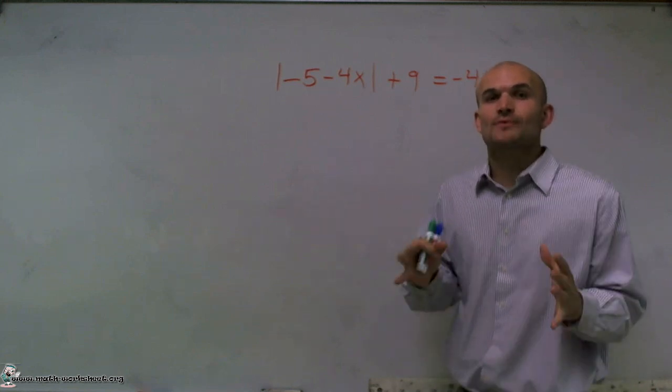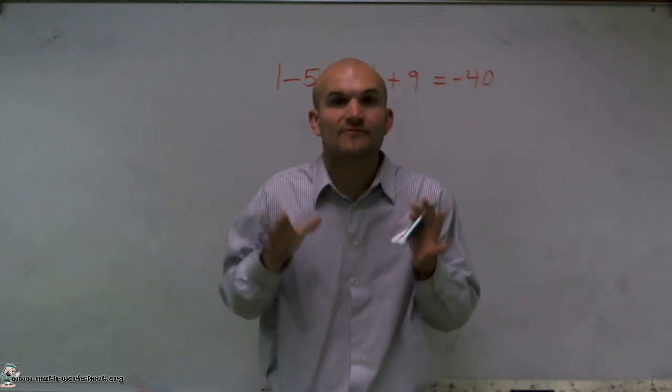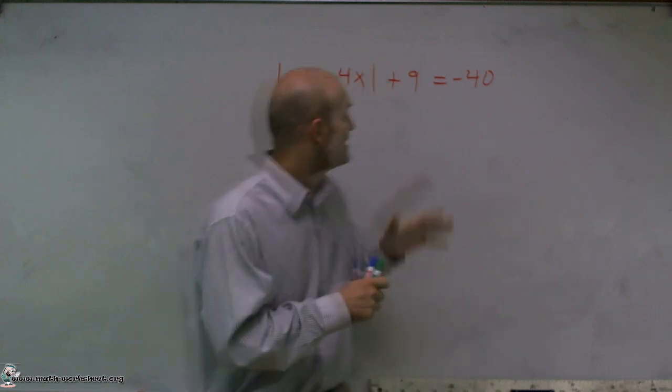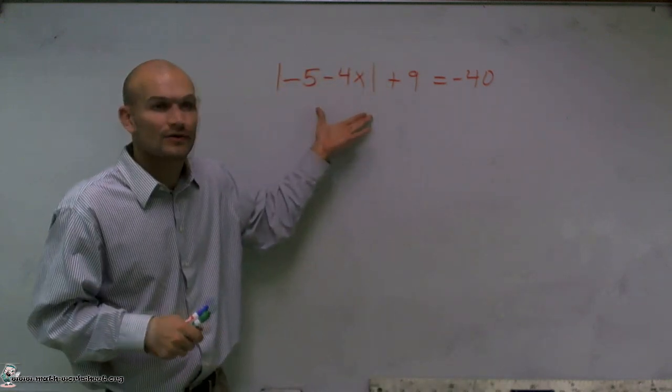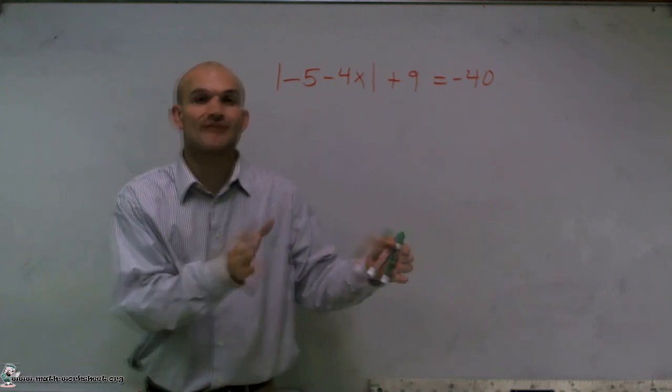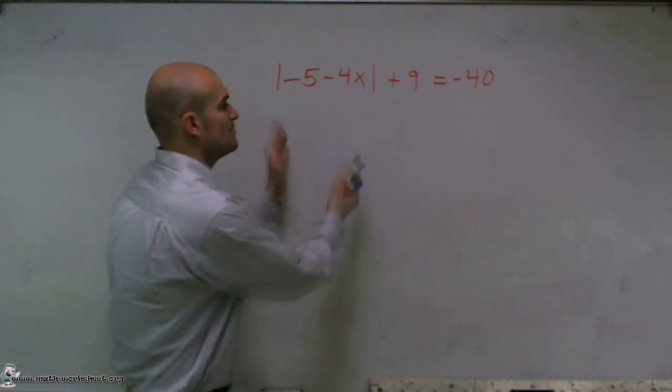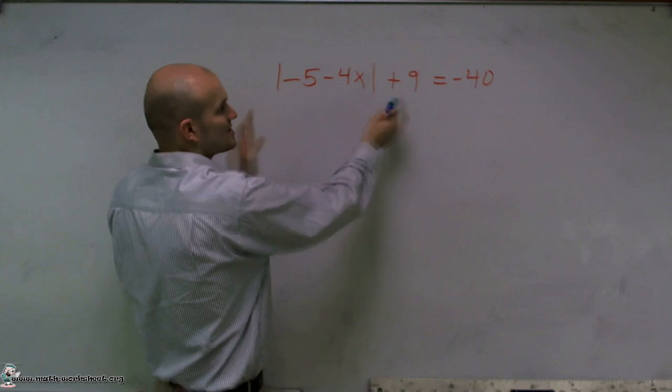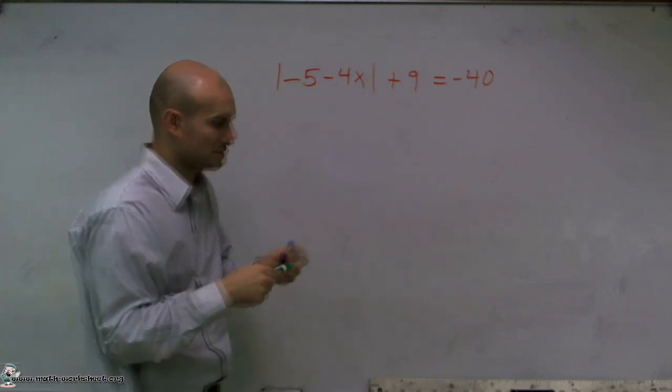Now, whenever we have absolute value equations, it's very important for us to make sure that we isolate the absolute value sign. OK, because remember, when we're solving for absolute value, we're going to find that positive and that negative value. So it's really important for us to get rid of anything else that's outside of our absolute value function.